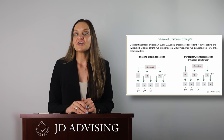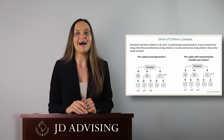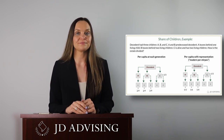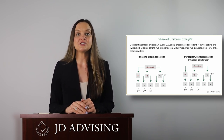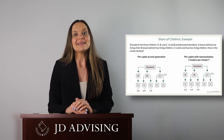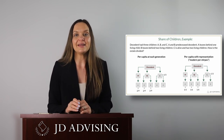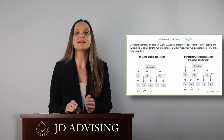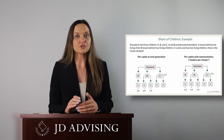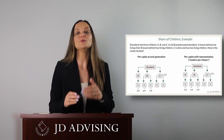Under per capita at each generation, we start by going to the first generation where someone is alive. A and B have predeceased, but C is alive, so we start here. We pass out a share to each living person, so C gets a third. Next, we take the one-third share that A would get and the one-third share that B would get, add them up, and divide equally at the next generation. So A's child and B's children will each take an equal share of the two-thirds, or two-ninths each.